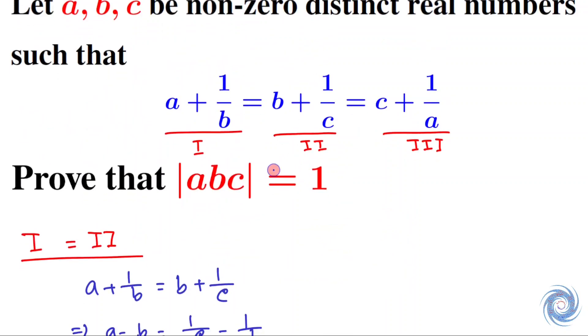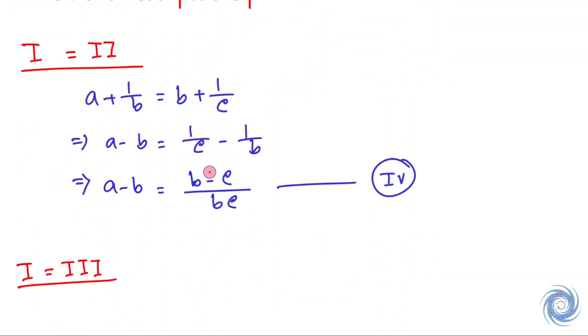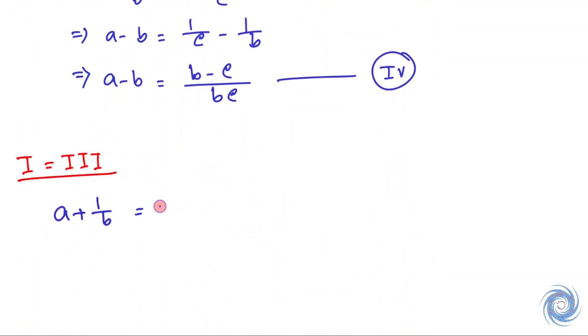Now by equating I and III, we have a plus 1 over b equals c plus 1 over a. This implies a minus c equals 1 over a minus 1 over b, so a minus c equals b minus a over ab. Let us take this equation as Equation V.